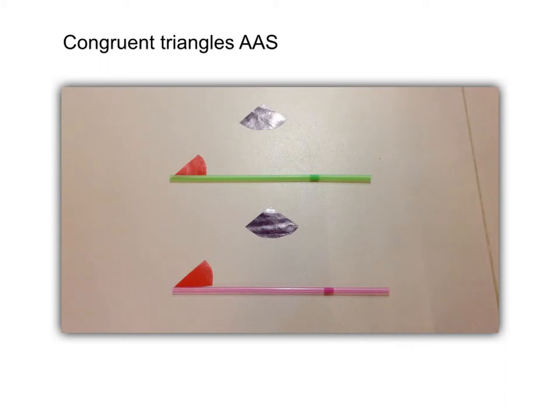Again we can complete the triangle by drawing these straight lines. And now we have two congruent triangles. The condition is AAS.